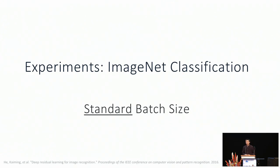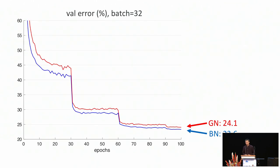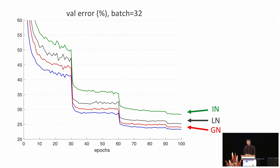We show some experiments on ImageNet classification. We use a standard ResNet-50 model with a standard batch size of 32 per GPU, and simply replace all the batch norm in the model by the other three normalization methods without changing any hyperparameters or training settings. We plot the validation error curve during training. The standard training protocol decays the learning rate at the 30th, 60th, and 90th epochs, leading to the sudden drop in error rate. Group norm's performance is very close to batch norm, and it performs best among all three batch-independent normalization methods.